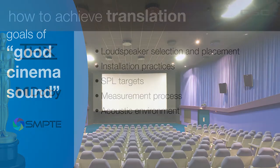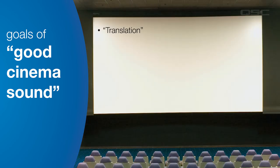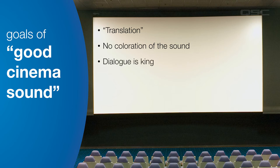So what exactly is good cinema sound, and why is it so important? We've already covered translation. Next is the removal of coloration of the sound source — the audio system should be neutral, and the room should have as little impact on what we hear in the audience as possible. Dialogue is king. If the actor's voice is not crystal clear, you've missed the mark. Even and balanced coverage is critical.